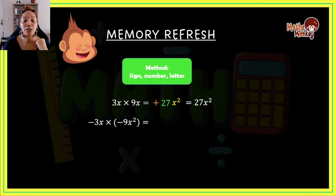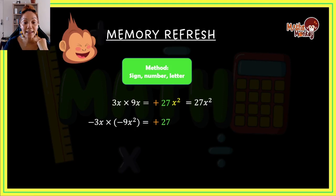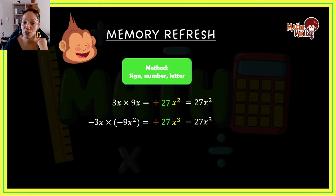Next: negative 3x times negative 9x squared. Again we work sign-number-letter. Negative times negative is positive. 3 times 9 is 27. Then the letters: x times x squared gives me x to the power of 3. So the answer is 27x cubed.